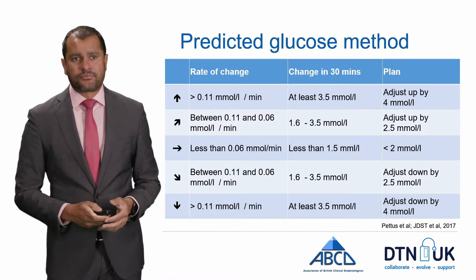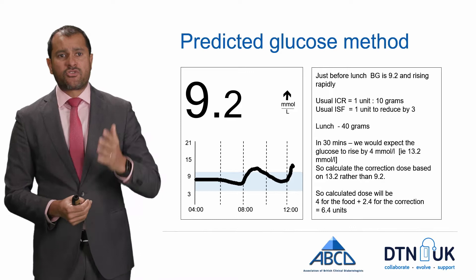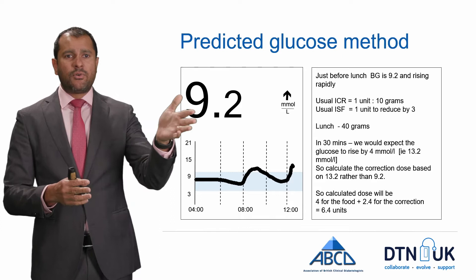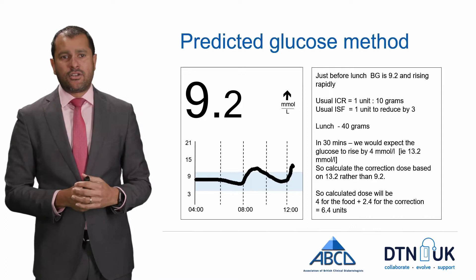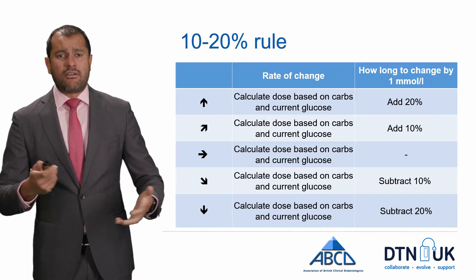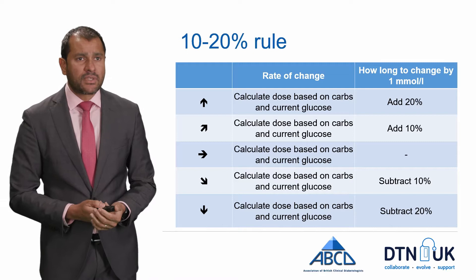Worked example of the predicted glucose method: blood glucose is 9.2 and going straight up, lunch is 40 grams. In 30 minutes the glucose is expected to rise by an average of 4, so instead of using 9.2 we use 13.2 for the calculation. That gives 4 units for the food plus 2.4 units correction = 6.4 units total. Using a pen, you'd round to 6.5 or 7 units.